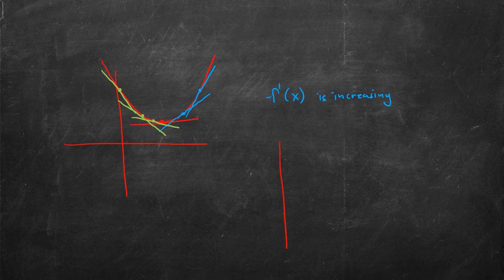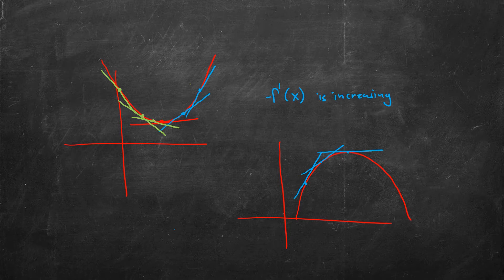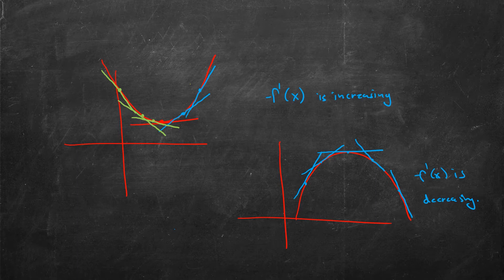Similarly, if I have a different scenario — a maximum — then when I try to figure out what's going on with the slope, it starts at some large value, then sort of peters off, eventually becomes zero at the actual maximum itself, then the slope starts getting negative and steeper and steeper. So what happens here is that f prime of x is actually going to be decreasing. Let's take this intuition about whether the derivative is increasing or decreasing and make it more precise into a test for maximums and minimums.